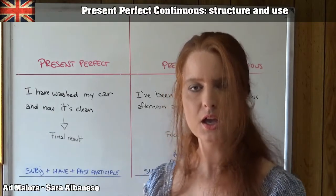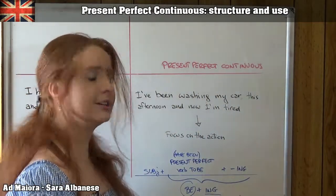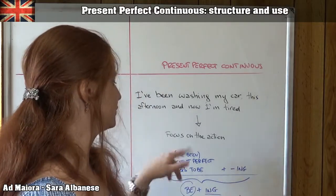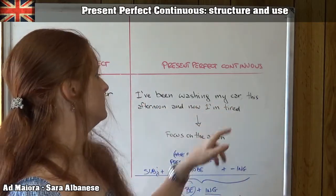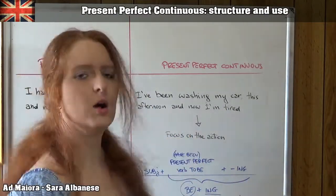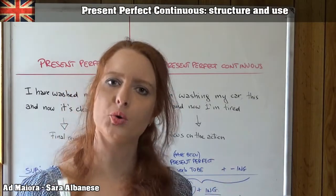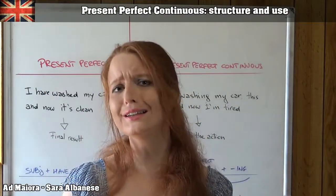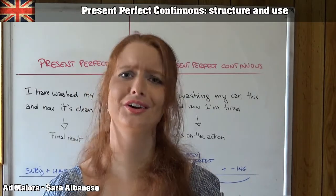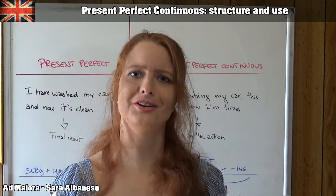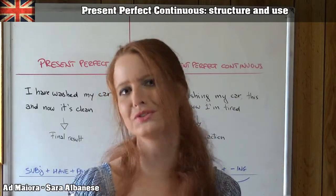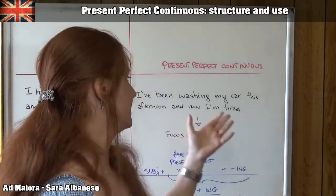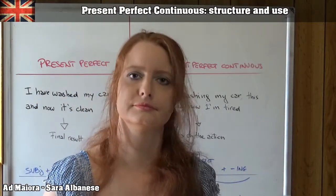On the other side: I've been washing my car. This is our present perfect continuous. I've been washing my car this afternoon, and now I'm tired. The focus isn't on the result. It doesn't really matter if the car is completely clean or I've washed only one part, or if my work is concluded or not. This is not important. The focus is on the action — in this case, the action was extremely tiring.